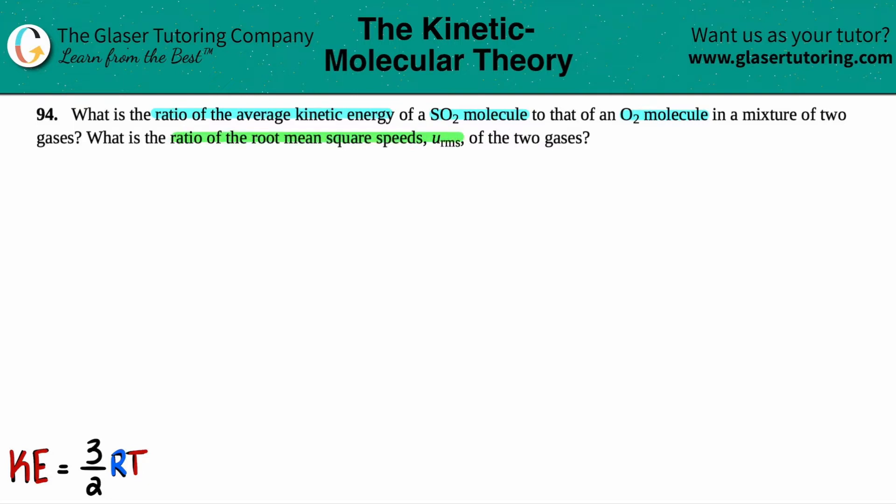And then what is the ratio of the root mean square speed, which is U RMS of the two gases? So here we have two different questions. So let's tackle the first one. They basically want us to know what the ratio of this average kinetic energy is between the SO2 molecule and the O2 molecule.